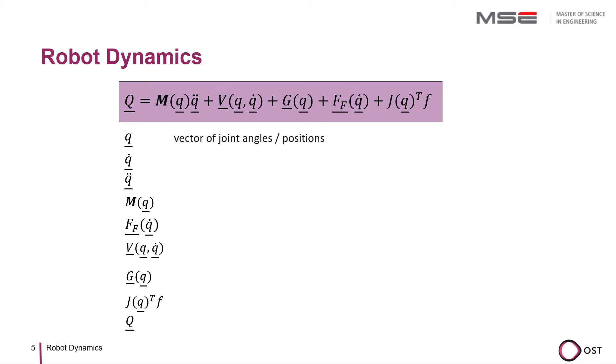Q in lower case represents the generalized robot coordinate. Therefore, it can be, for example, a joint angle or the position of linear axis. Q dot is therefore the velocity in generalized robot coordinates and Q dot dot corresponds to the acceleration.